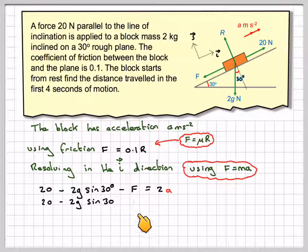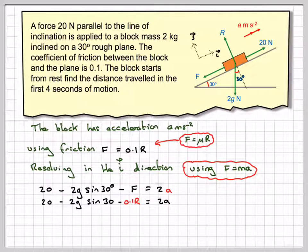Substituting this in, we can write f as 0.1 times r equals 2a. We'll call that equation 1.